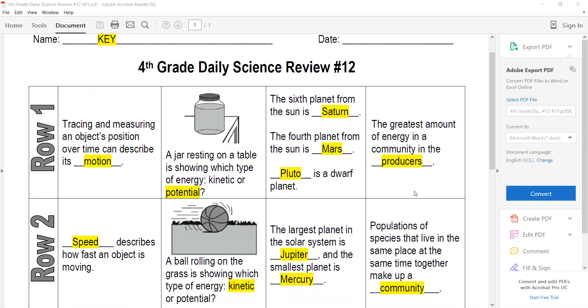Meaning it has the potential to move. If something is moving already, then it has kinetic. Our sixth planet is Saturn, the fourth planet is Mars, and Pluto is a dwarf planet. The greatest amount of energy in the community are the producers because they actually produce their own energy.